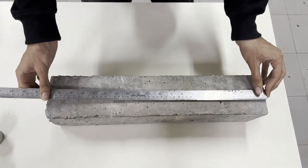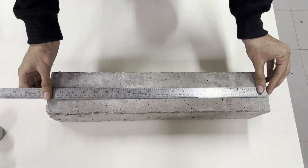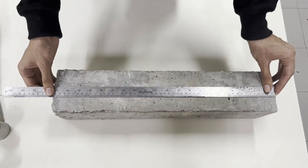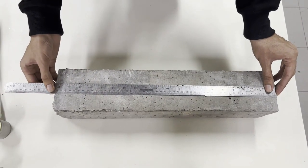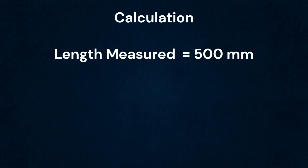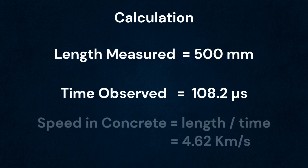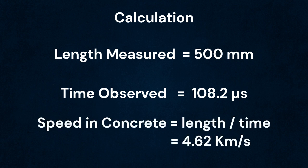Measure the length between the transducer and the receiver. We would then calculate the speed of ultrasonic waves in concrete using the distance measured and time observed. The calculated velocity is 4.62 km per second.